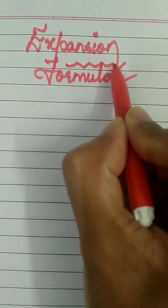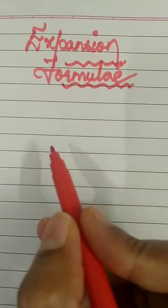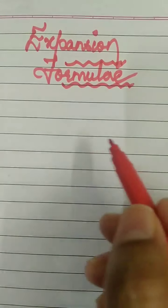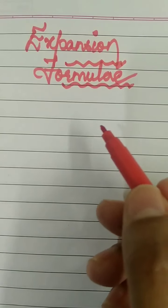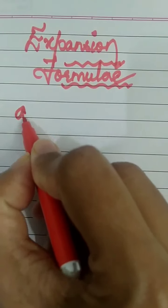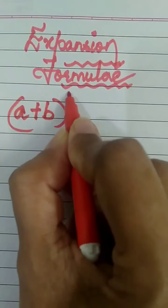Hello and welcome, my dear students. We had started with the chapter expansion formula and had already learnt one formula: (x + a) multiplied by (x + b). Today we will start with the next expansion formula, which is (a + b) the whole cube.